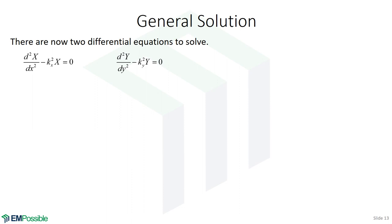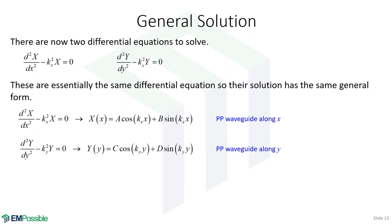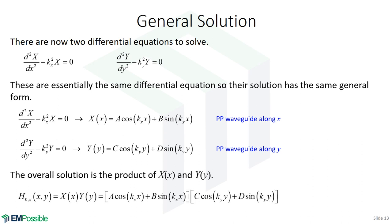We have two differential equations to solve — we've already solved these when we looked at the parallel plate waveguide, so we know the solutions are a cosine plus a sine. Our solution in X has constants A and B; our solution in Y has constants C and D. Now that we have solutions for X and Y, we can multiply them together. We originally wrote H-naught-Z as the product of X and Y, so multiplying gives us the overall general solution for H-naught-Z.